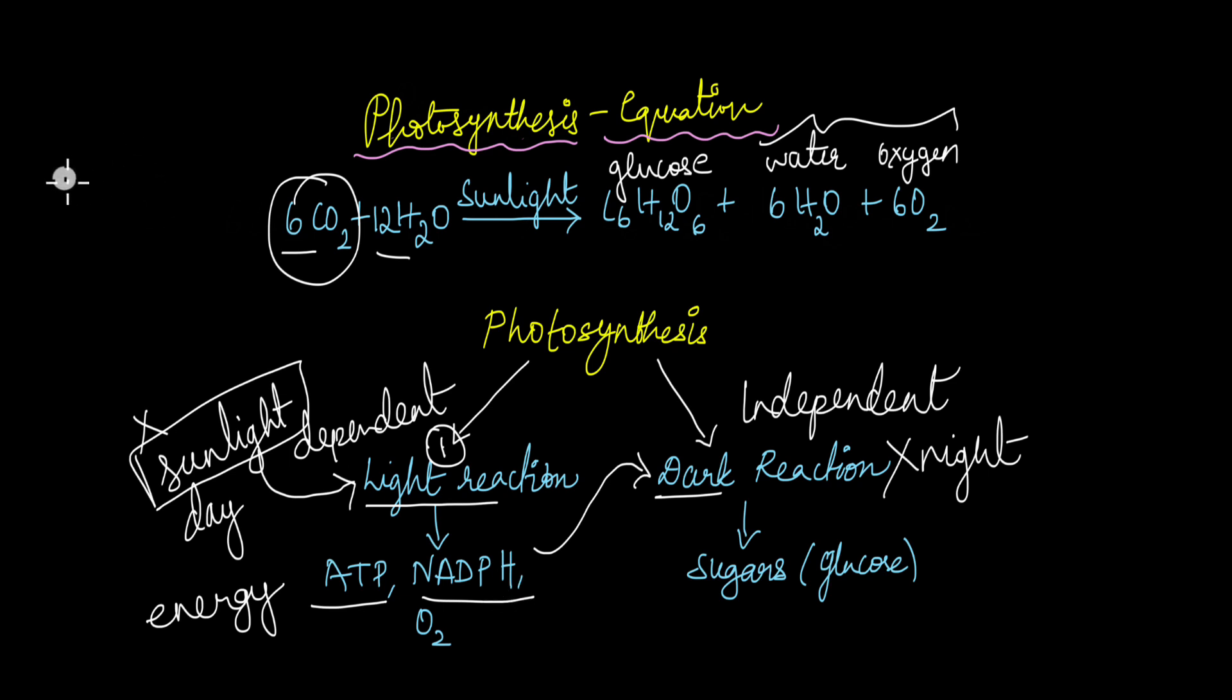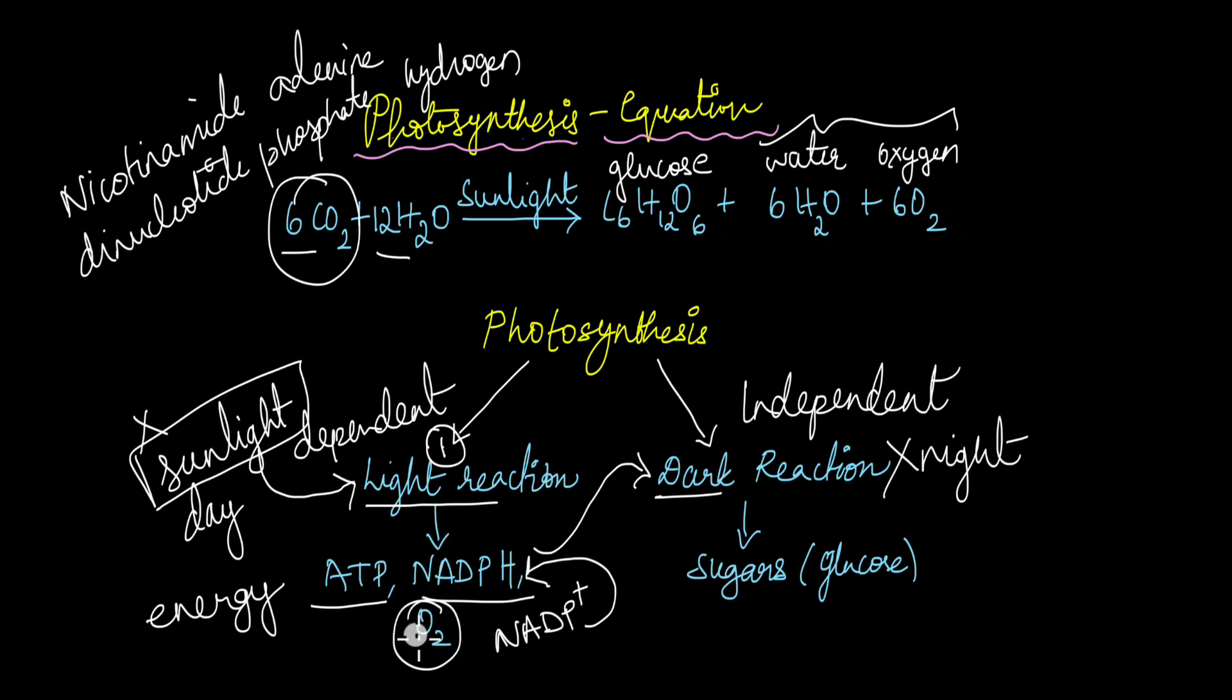NADPH is a coenzyme that stands for nicotinamide adenine dinucleotide phosphate hydrogen. This is the reduced form of this coenzyme. Its oxidized form is NADP+. It gets reduced to NADPH in the light reaction. Oxygen is also produced in the light reaction as a byproduct.